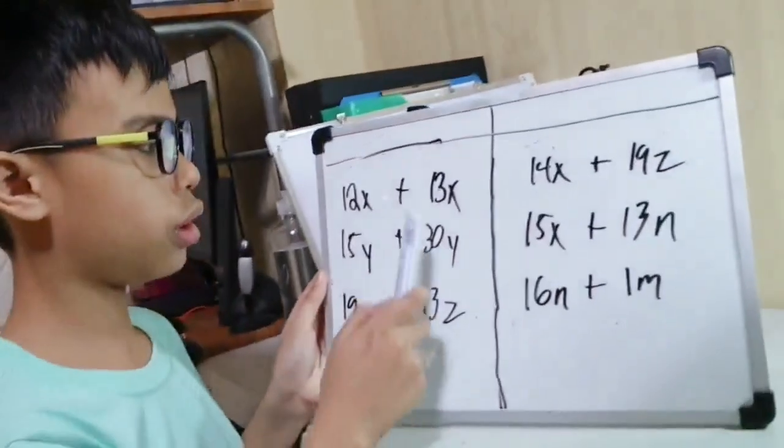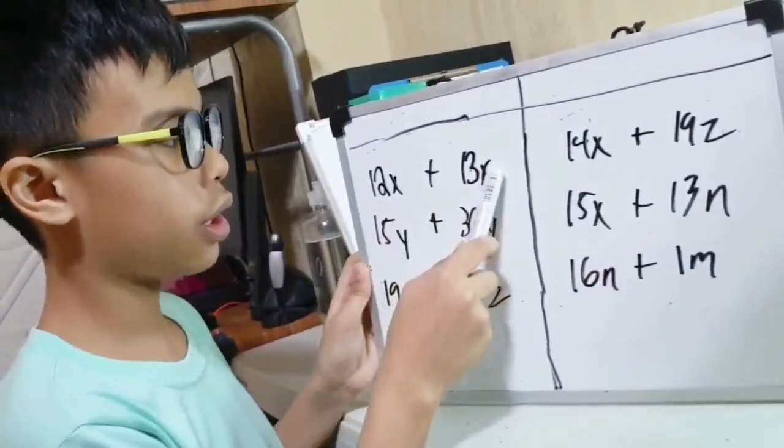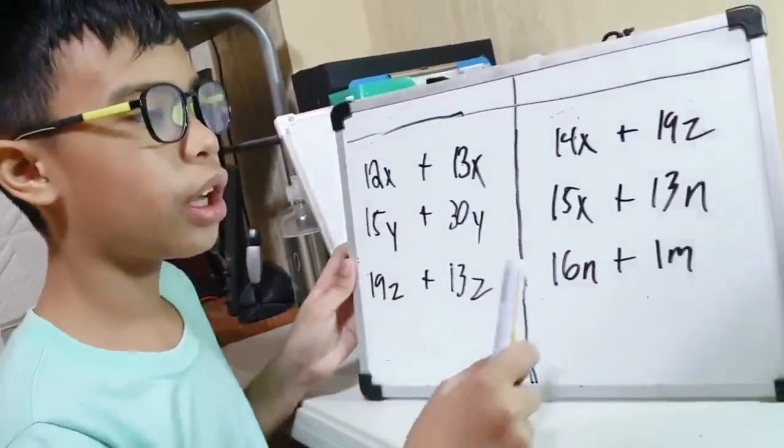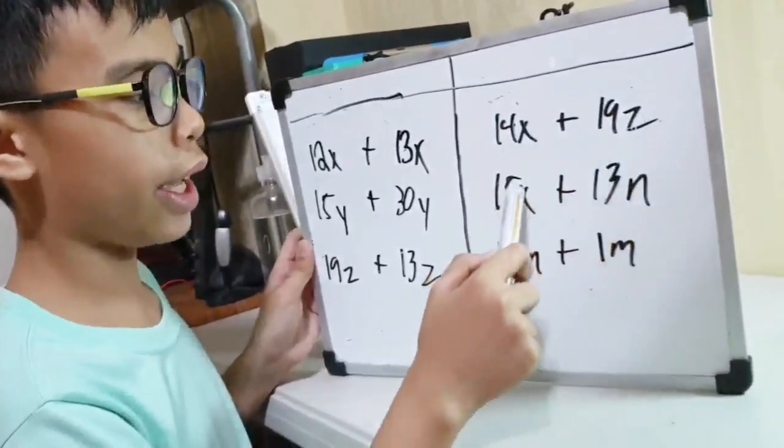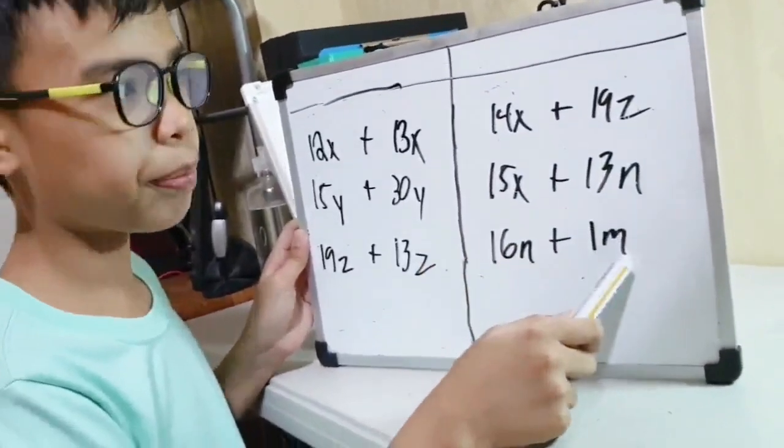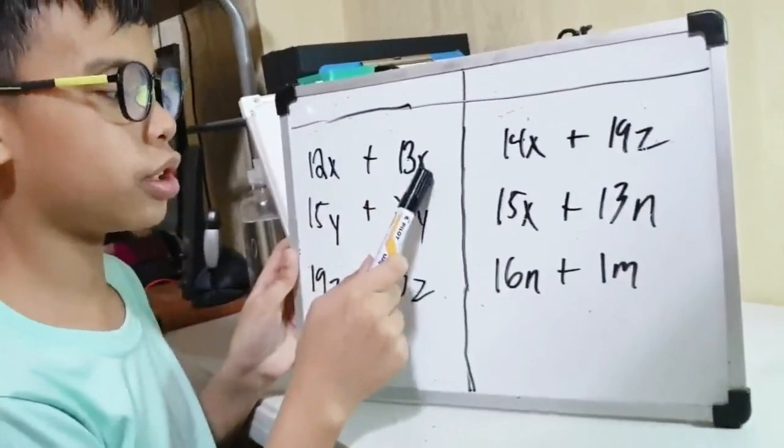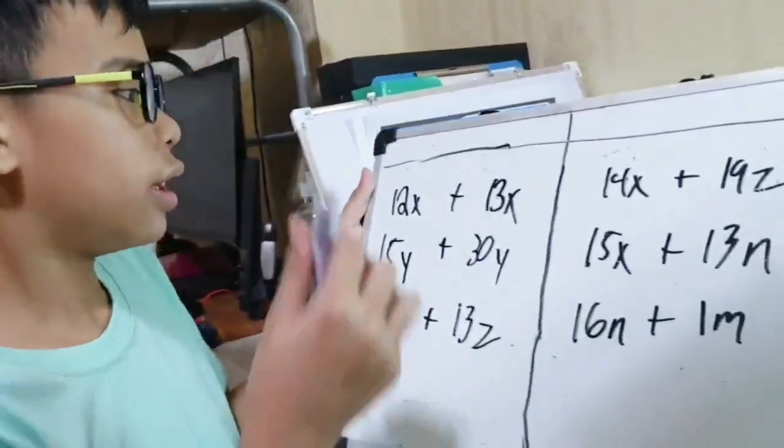Earlier I mentioned about terms. Now let me give you some examples of terms. Notice the difference between this and this. As you can see, X and X, they're the same. Y and Y, same. Unlike this one, it's different. X and Z, X and N, N and M. Since the variables are the same, we call them like terms.